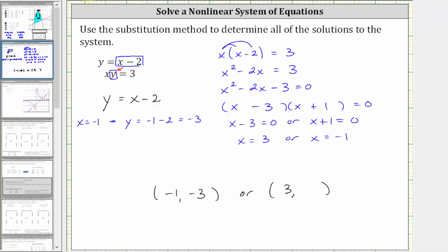And when x is three, we know y must equal three minus two, which is equal to positive one. So the second ordered pair solution is three comma one.